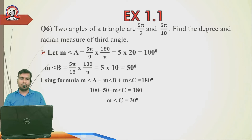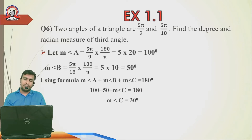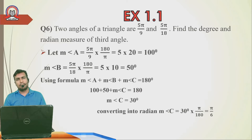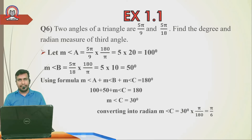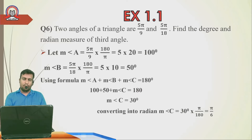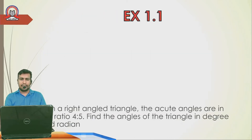But re-read the question: it asks for degree AND radian measure of the third angle. We have 30° — now convert to radian: 30 × π/180. The zeros cancel; applying the 3-table: 3 into 18 gives 6, so the answer is π/6 radian. Therefore the third angle is 30° or π/6 radian.